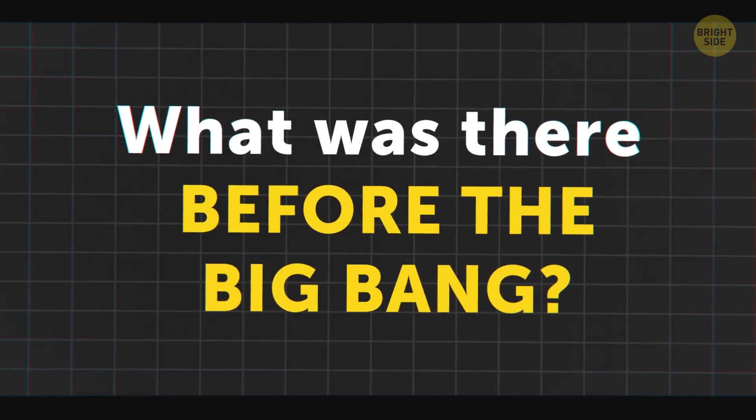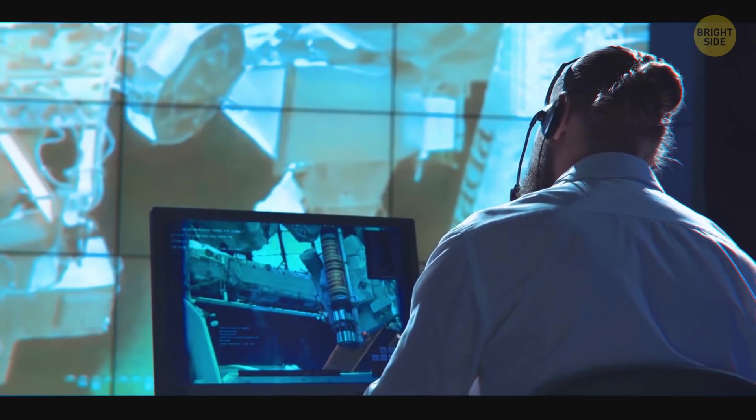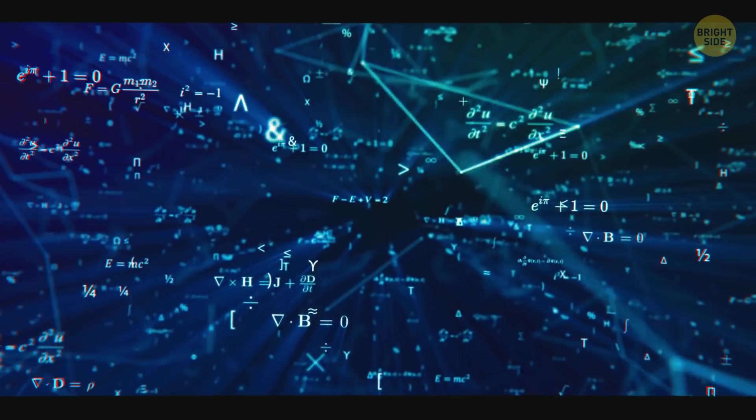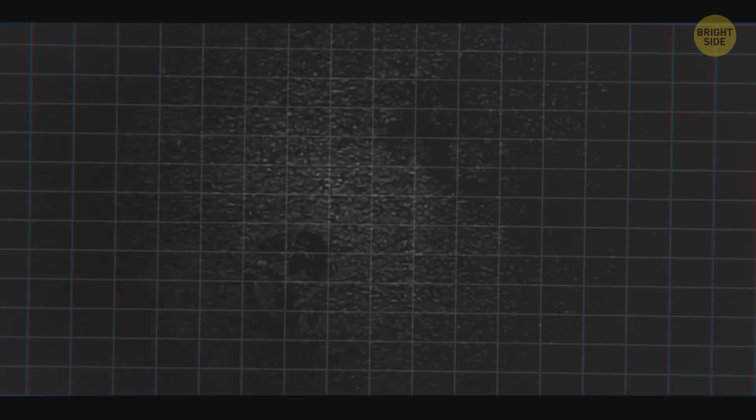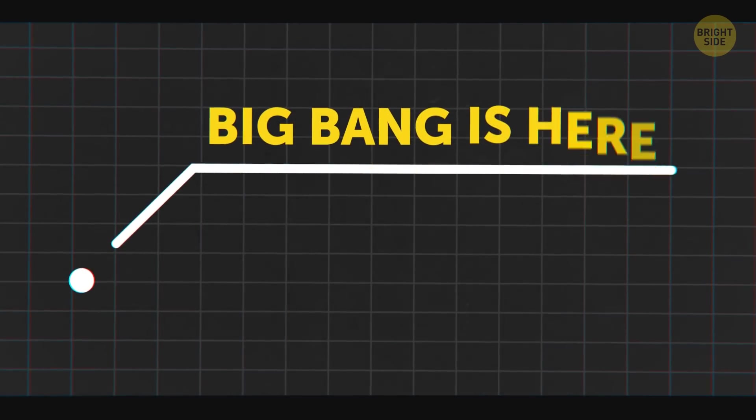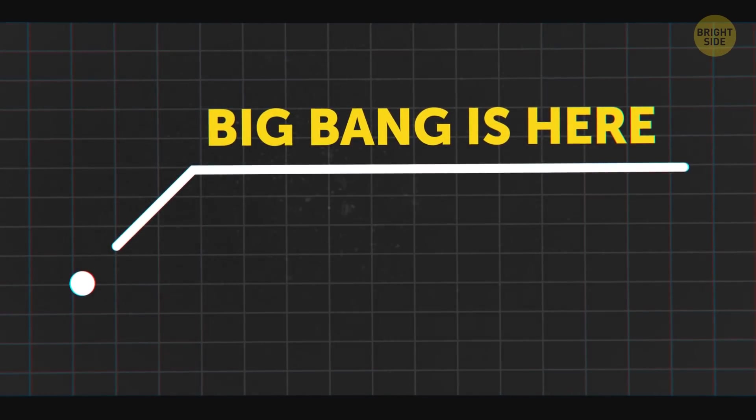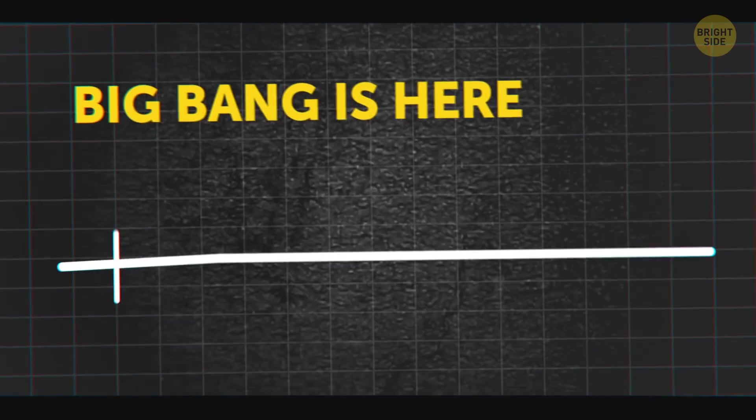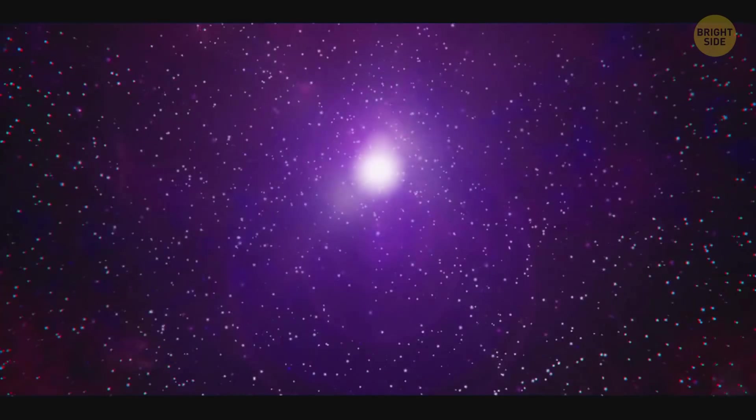What was there before the Big Bang? In short, no one knows. But there are theories. Most people imagine the Big Bang as some place where everything started. But it's actually not a point, but a moment in time. Before it all happened, the universe could be a super-hot, ultra-dense material. Then the Big Bang would become its main evolution point.